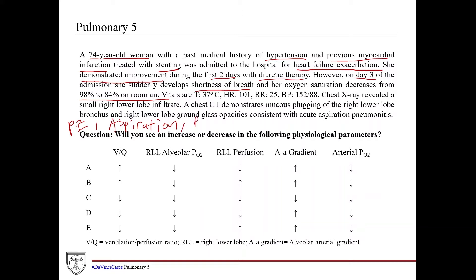Patients can also develop pneumonia from exposure to bacteria and viruses in the hospital. Looking at her vitals: temperature is 37°C, so she's afebrile — infection is still possible, but you'd expect a fever. Heart rate is 101, so she's a little tachycardic. Respiration rate is 25, elevated but not dramatically so. Blood pressure is 152 over 88, elevated but she is hypertensive.